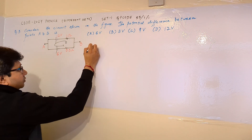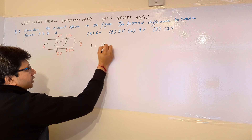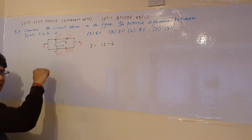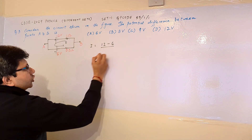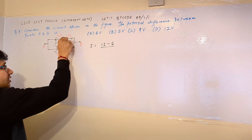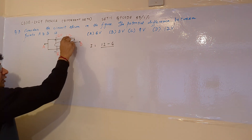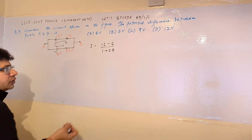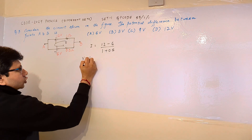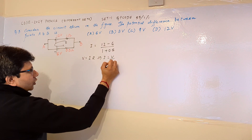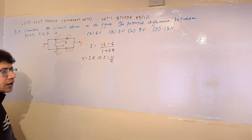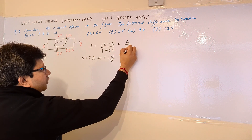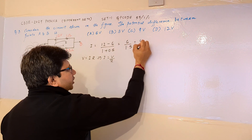To calculate the current: the total effective voltage is 12 minus 6 because these two batteries are opposing each other. Current equals total voltage upon total resistance, because these two resistors are in series for this loop, making total resistance 1 plus 0.5. So by Ohm's law, I equals V over R: 6 divided by 1.5 gives 4 amperes.